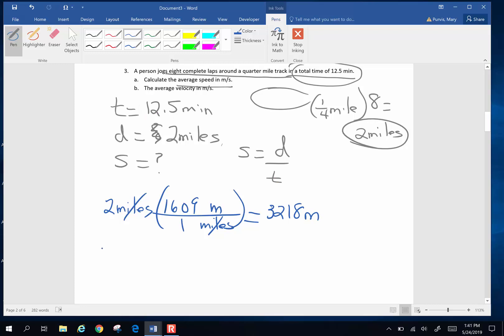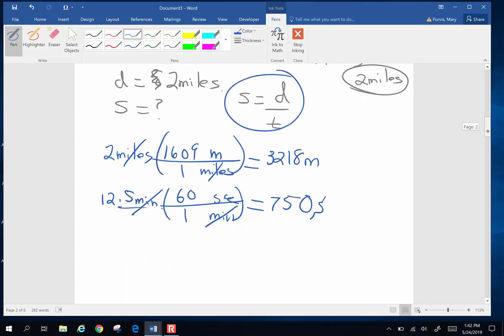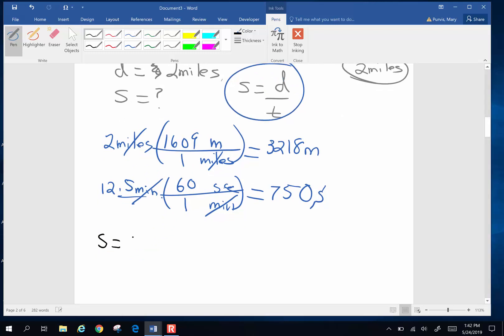And time, I've got to convert 12.5 minutes. I've got to convert that to seconds. Why? Because they want this in meters per second. So get rid of minutes, keep seconds. There are 60 seconds in one minute. Minutes are on the top, minutes are on the bottom, they're going to cancel. Now pick up my calculator. 12.5 times 60 equals 750 seconds. Now I am going to put all of this into this equation here. Speed is going to be distance divided by time. 32.18 meters divided by 750 seconds. So 32.18 divided by 750 and I end up with 4.2906 repeating meters per second.